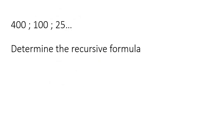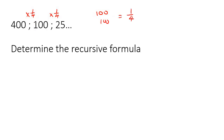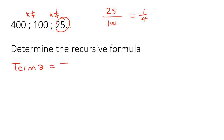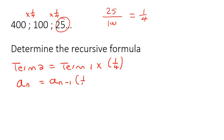Let's do this one. Here we are dividing by 4, which is the same as multiplying by a quarter. If you can't figure that out, you should always take the second number divided by the first number — that gives a quarter. Or you could take the third number divided by the second number — it's also going to be a quarter. So we could say term n is the same as term (n−1) multiplied by a quarter.